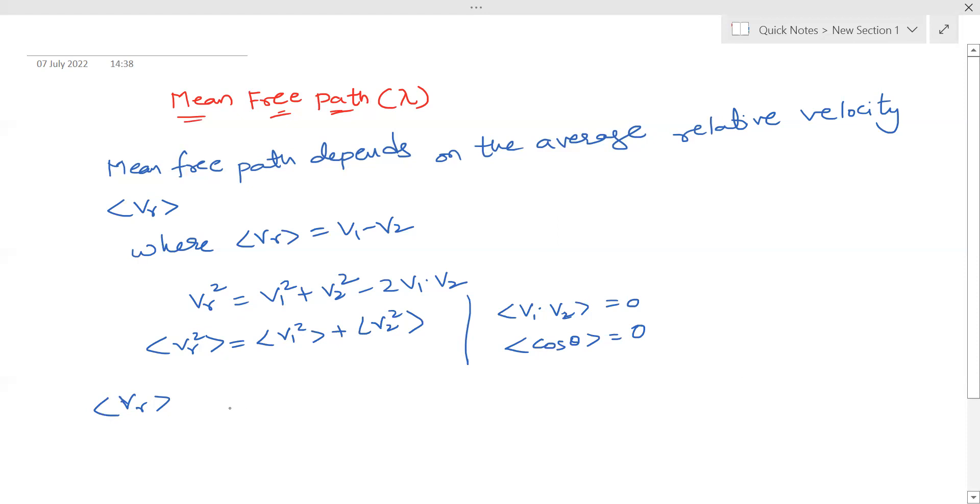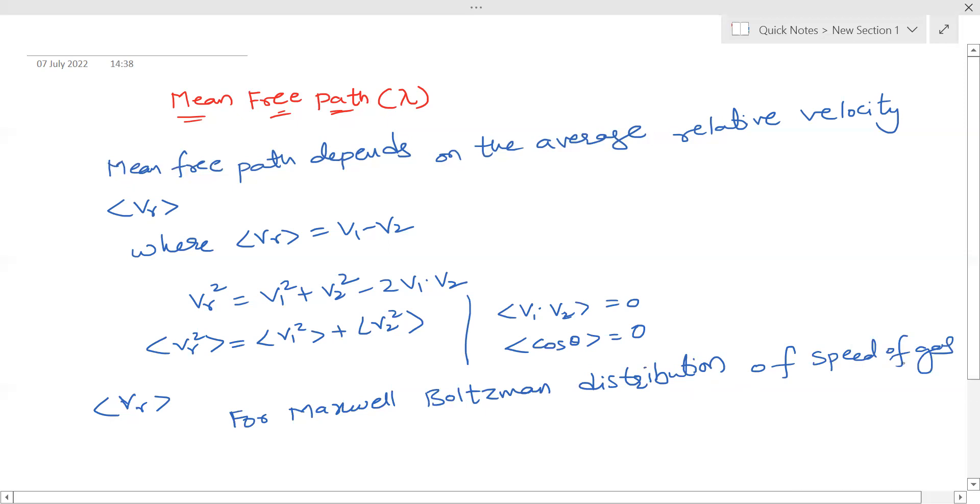Now if we use the probability distribution describing molecular speed, that is for Maxwell-Boltzmann distribution, then in this case we can approximate the value of vr like this. This can be under root vr squared, which is not exact value but approximated value that is applicable for Maxwell-Boltzmann distribution. This approximate value is equal to root 2 times v.